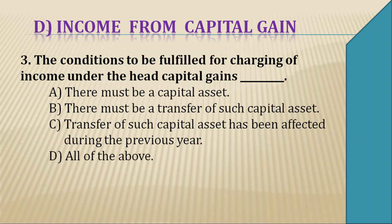Question 3: The conditions to be fulfilled for charging of income under the head capital gain. The conditions are: A — there must be a capital asset; B — there must be a transfer of such capital asset; C — transfer of such capital asset must have been effected during the previous year. All three conditions must be fulfilled. So our right answer is D — all of the above.